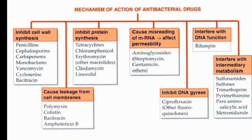Another class is misleading of mRNA, like aminoglycosides — streptomycin, gentamicin. Another is inhibiting DNA gyrases, like ciprofloxacin, and interfering with DNA function — rifampin. The last mechanism of action is interfering with intermediary metabolism, like sulfonamide, sulfones, trimethoprim, para-aminosalicylic acid, and metronidazole. So metronidazole comes under the mechanism of interfering with intermediate metabolism.